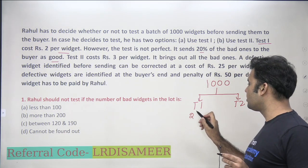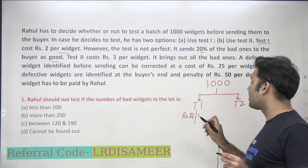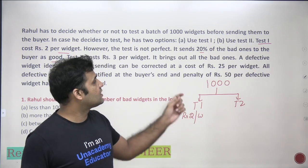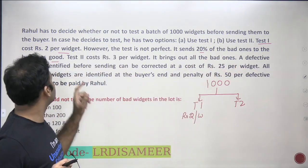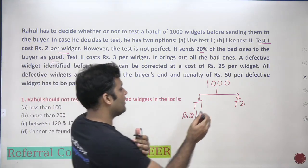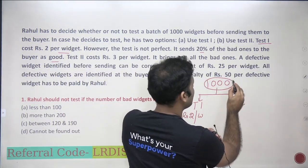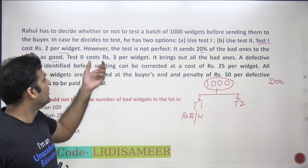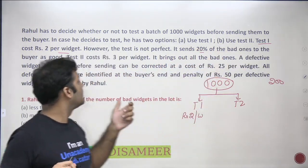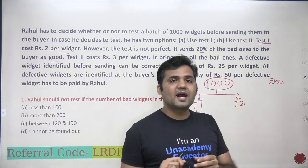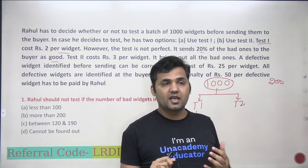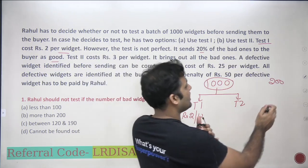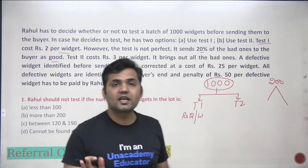If Rahul goes for Test 1, it will cost him 2 rupees per widget. The problem with Test 1 is that it sends 20% of the bad ones to buyers as good. So if out of 1000 widgets, say 200 are bad, Test 1 will send 20% of those bad ones to buyers — meaning Test 1 doesn't detect all the bad ones.